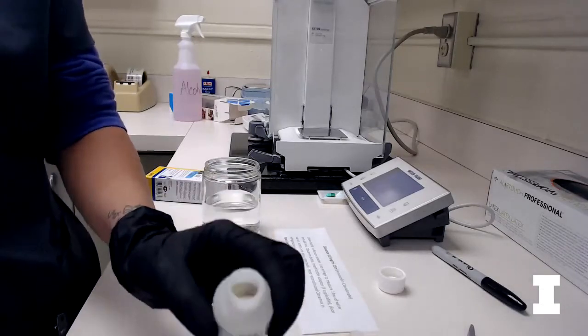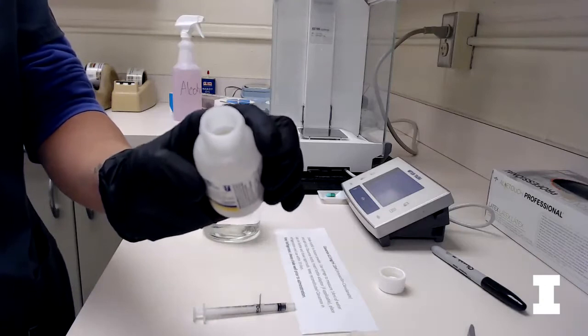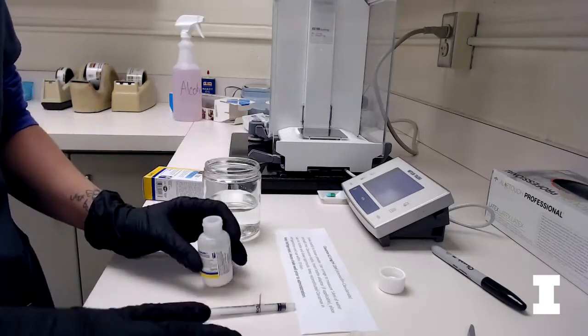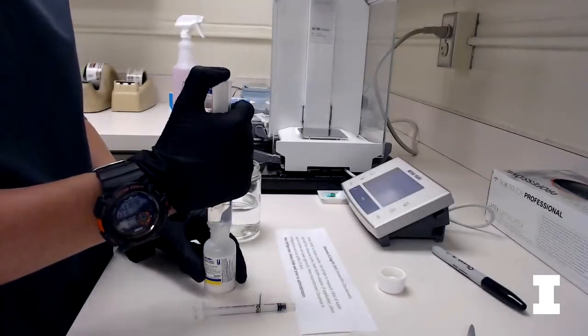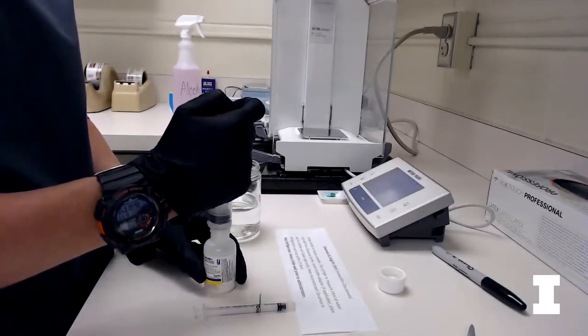Once you have the safety seal removed it's going to look a bit like this. Then you will go ahead and add the 14 mils that you just measured of water into the bottle.